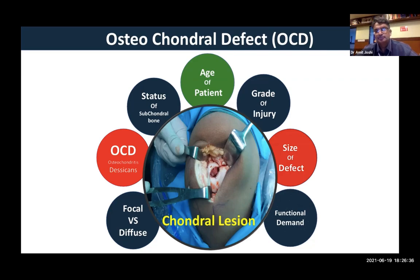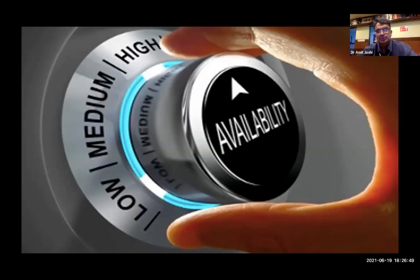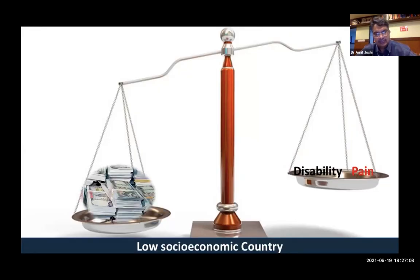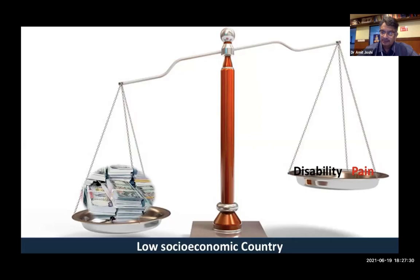The functional demand of the patient is a crucial factor. These are the scientific factors, but a less scientific factor is personal experience and availability of treatment modalities. In my context in Nepal, we are in a low socioeconomic condition where money is weighted more than disability and pain — people will tolerate disability and pain but will preserve their money. The newer advances in cartilage treatment are very costly and beyond the reach of the majority of my patients.